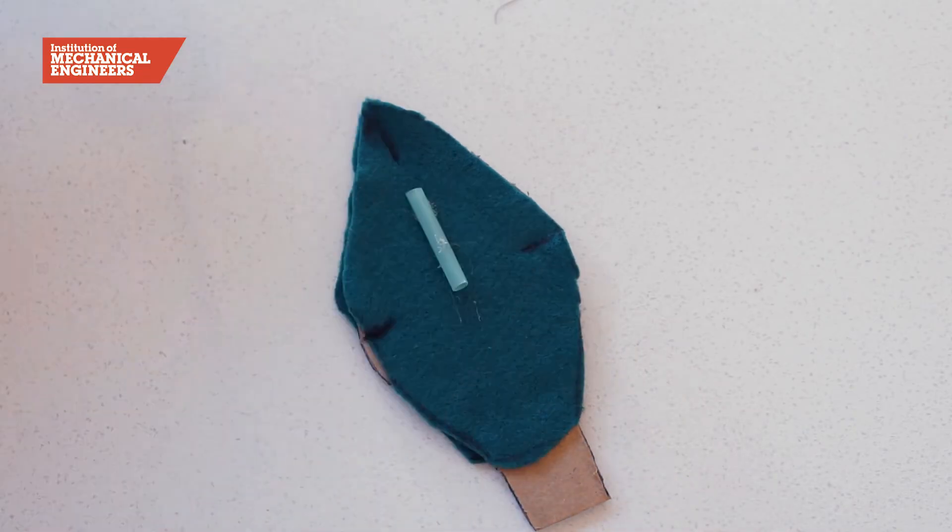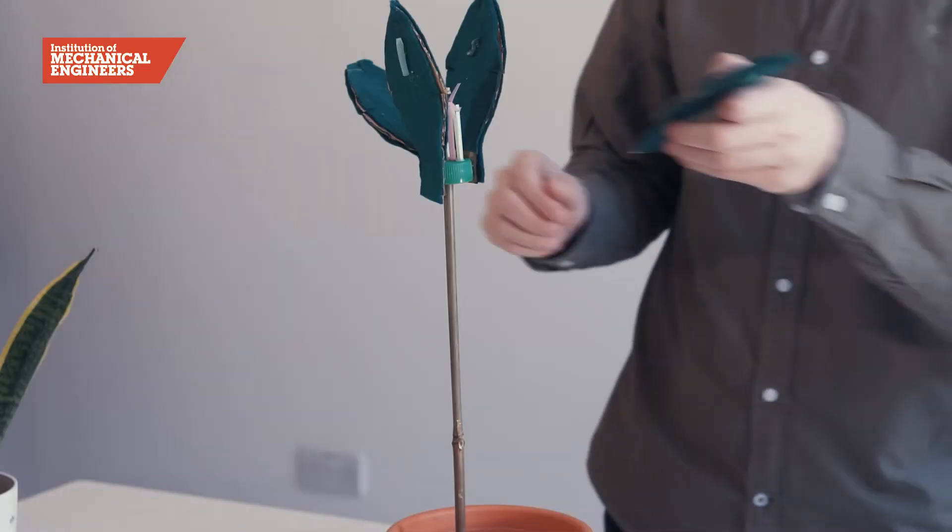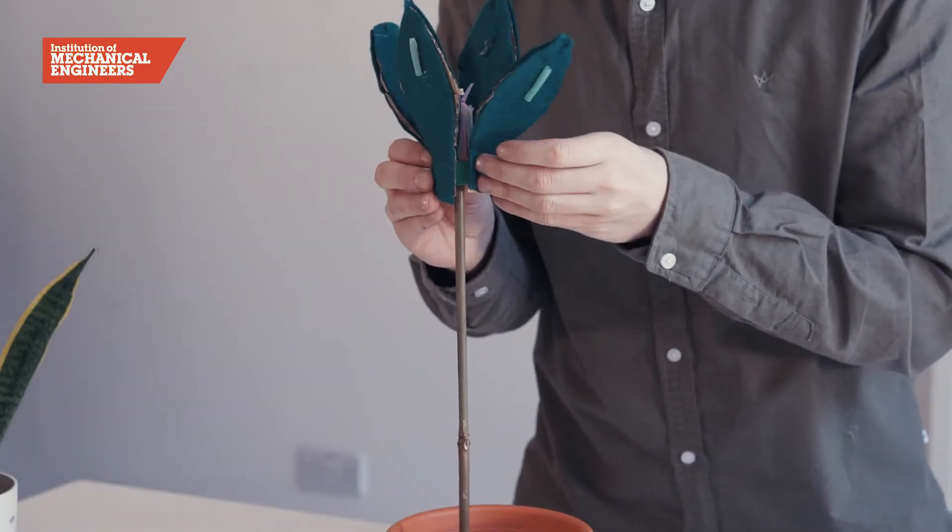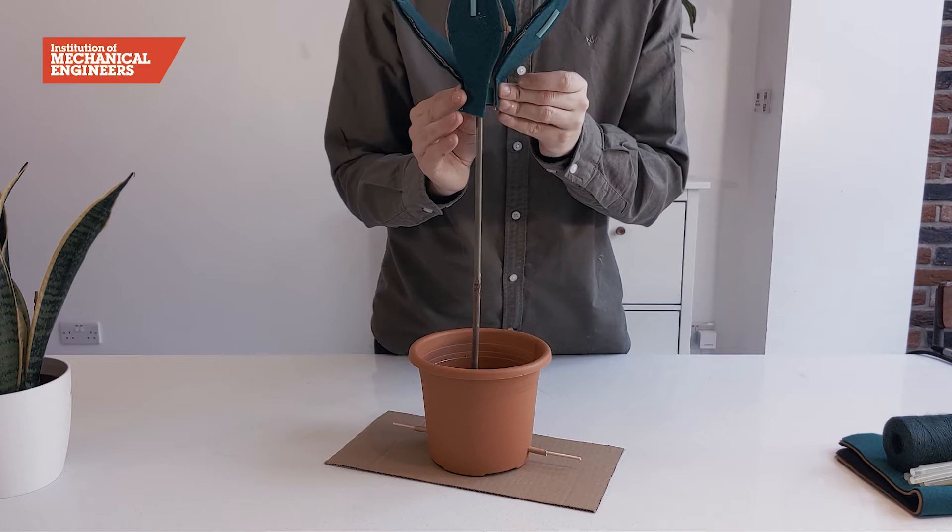To attach the petals to the stalk, glue the cardboard tabs around the edge of the plastic bottle cap. Make sure the side of the petal with the straw stuck on it is facing outwards.